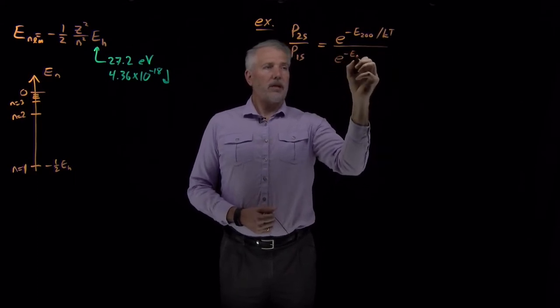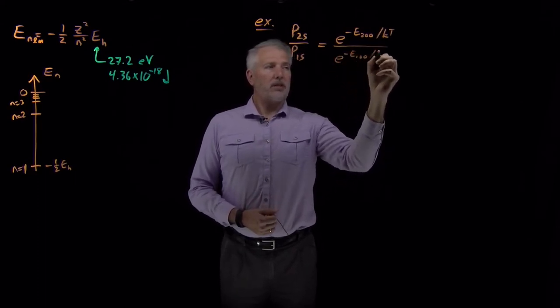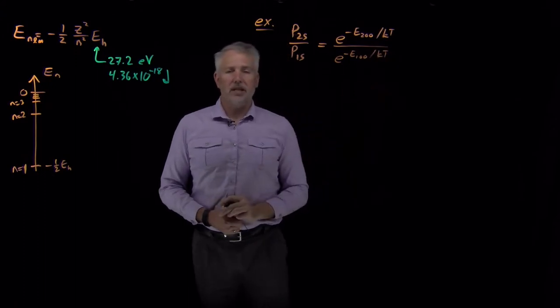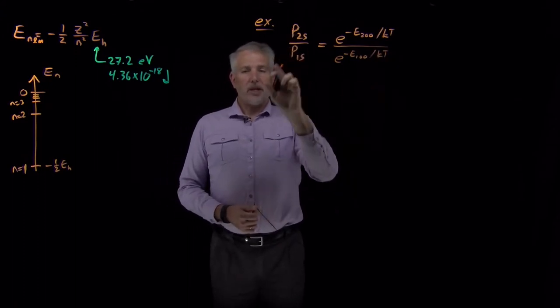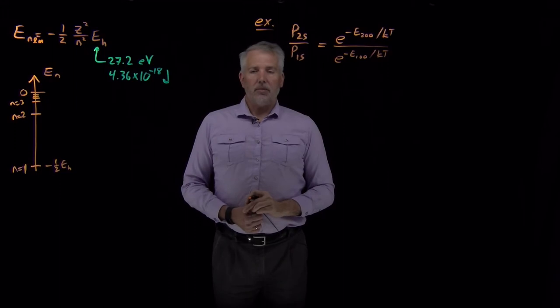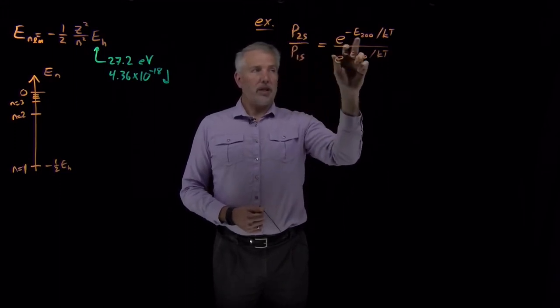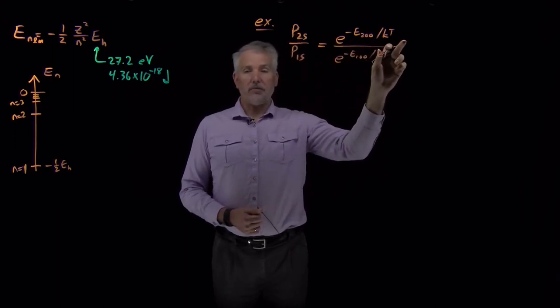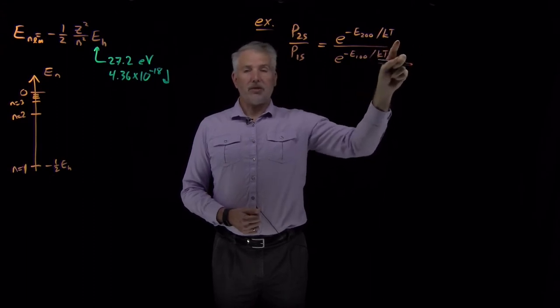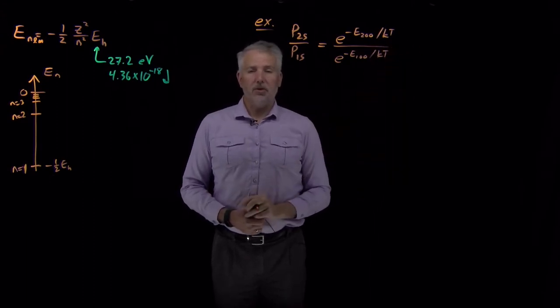We divide that by e to the minus energy of the 1s state over kT, and then because I'm taking this ratio, I don't have to worry about partition functions. The actual probability of the 2s state is e to the minus energy over kT divided by a partition function. But if I divide by a partition function on the top and on the bottom, then those two will cancel.